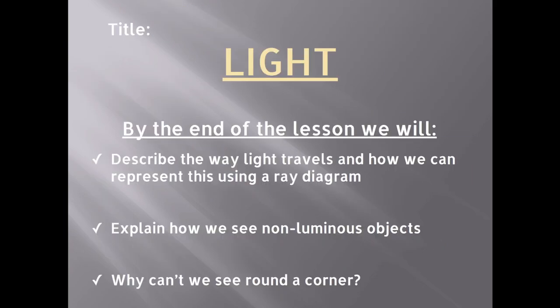So today we're looking at how light travels and how we can represent that using a ray diagram. We're going to explain how we see non-luminous objects — luminous objects obviously give out light, that's how we see them — but how we see non-luminous objects, and why we can't see round corners.